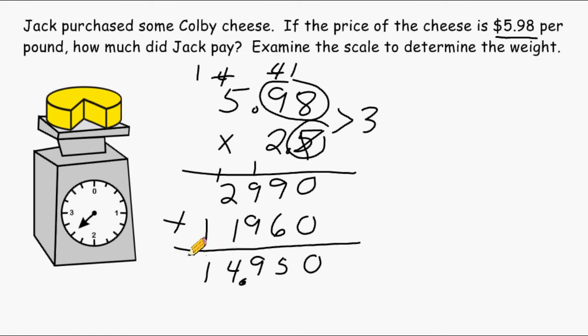Now because this total is a dollar amount, we only are allowed to have two numbers after the decimal. So what we can do is simply get rid of the zero right here. And we have our answer, which is a total of $14.95 paid for the Colby cheese.